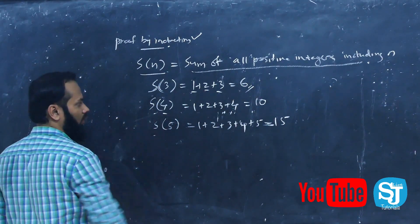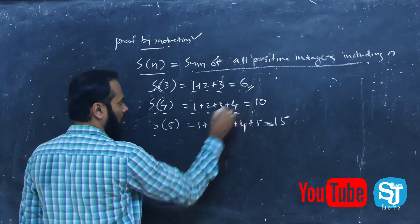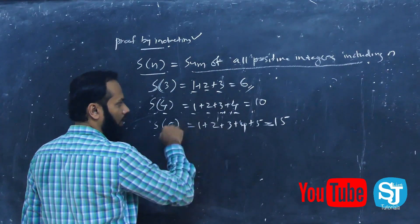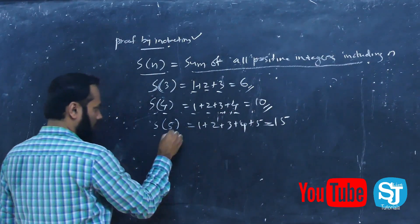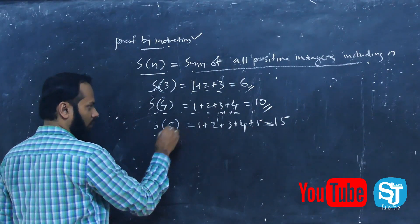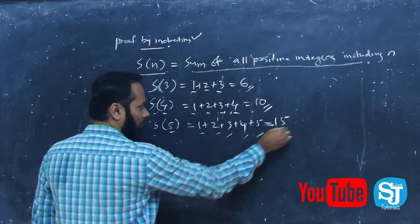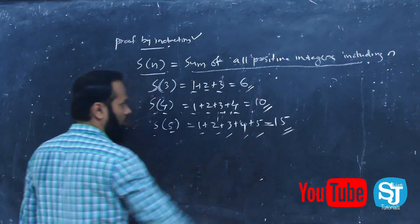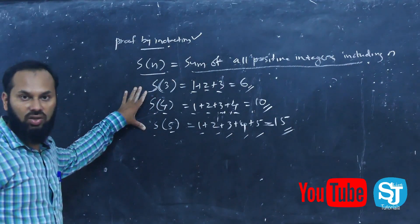Then S of 4 is equal to 1 plus 2 plus 3 plus 4, which equals 10. And S of 5 is equal to 15. These are common examples.